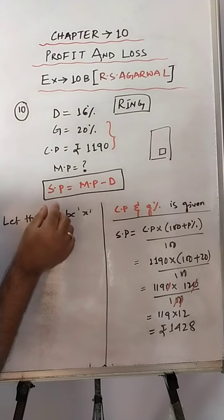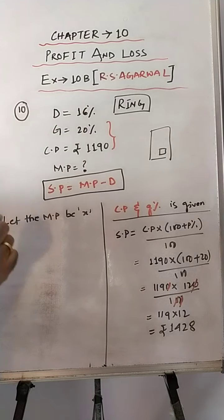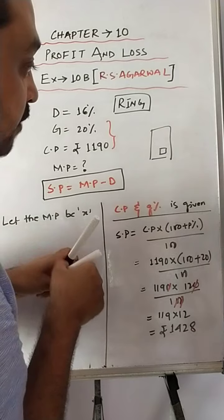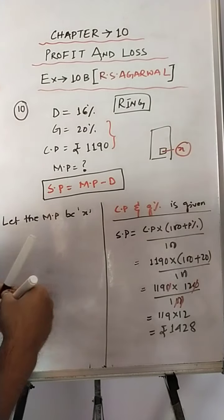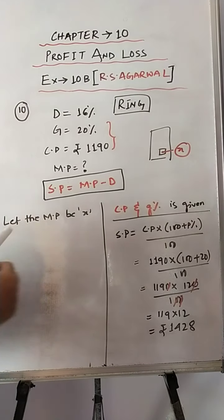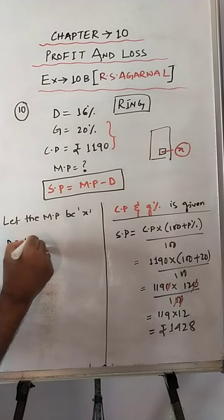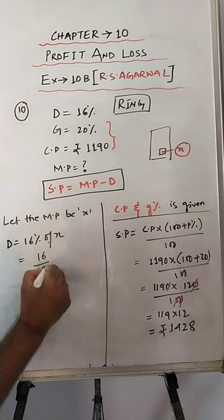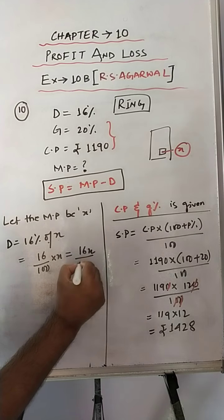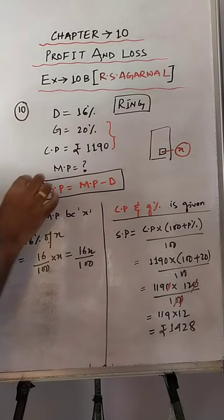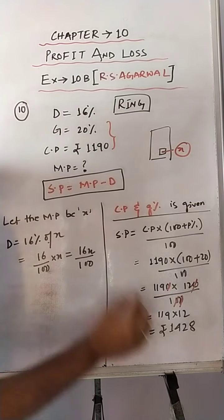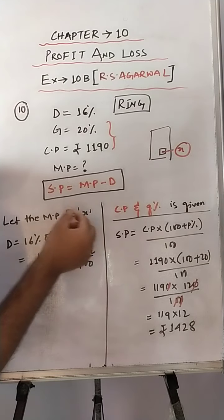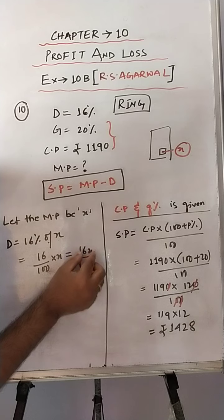So let the MP be X. Since we have assumed MP as X, we can now find the discount. Discount percent is 16%, so on mark price X, the discount would be 16% of X, which is 16 by 100 into X, that is 16X by 100. Now in the formula SP equals MP minus discount, we know SP is 1428, MP is X, and discount is 16X by 100.